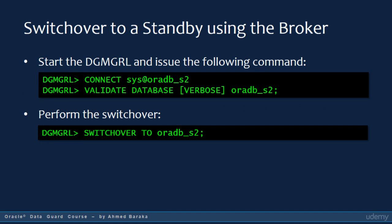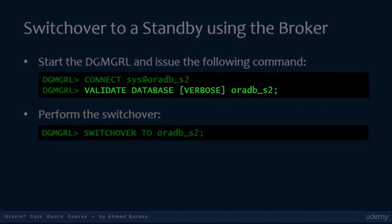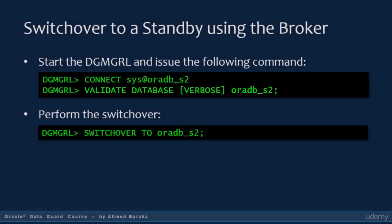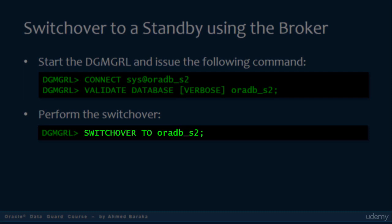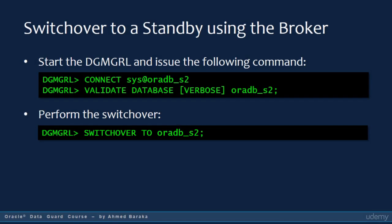If the broker is configured in your Data Guard, the switchover procedure is much simpler and is the same regardless of the standby type. First, use VALIDATE DATABASE in the DGMGRL command prompt — this verifies that the basic switchover requirements are fulfilled. After that, just issue the SWITCHOVER command and the broker will internally communicate with all the databases and perform the required tasks to complete the switchover. This is an example of how the broker is simpler than SQL*Plus in managing your Data Guard configuration.